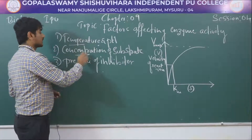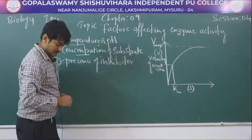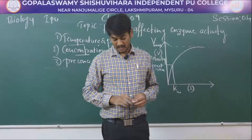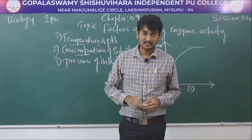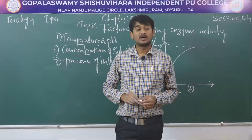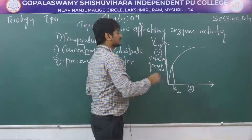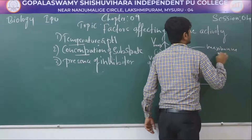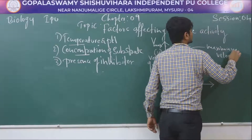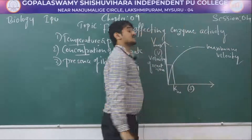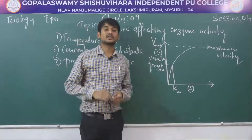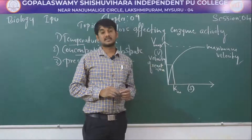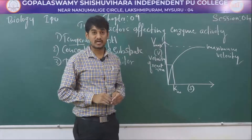The second factor is concentration of substrate. This is also one of the important factors affecting enzyme activity. With the increase of substrate concentration, the velocity of enzyme rises at first, then it reaches maximum velocity. This maximum velocity is not exceeded further because the enzyme molecules are fewer than the substrate molecules, so there are no free enzymes to bind the substrate molecules.